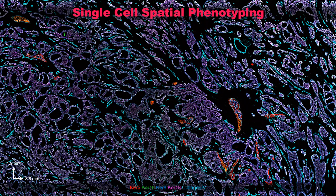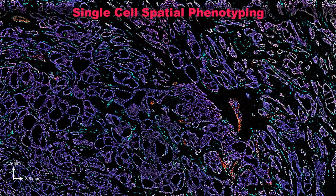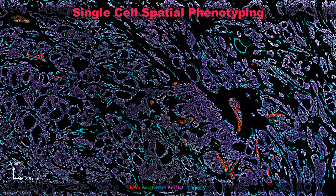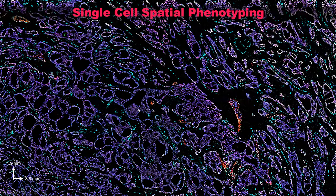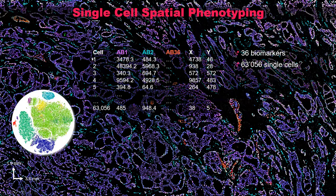How does this concept of single-cell spatial phenotyping work? Essentially, what we do is we register every cell by multi-parameter segmentation. Here's your actual fluorescence image, and here's a segmentation map. Every cell has now been registered as an object. What happens once you register every cell as an object is you can start to catalog it. Every cell has a number. In this particular tissue, there are 63,000 cells.